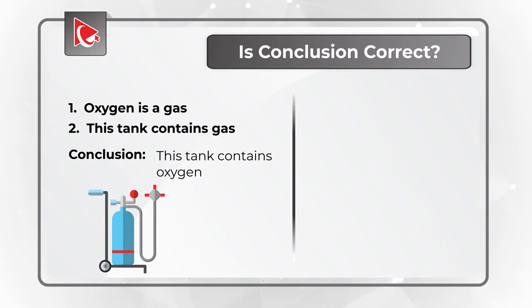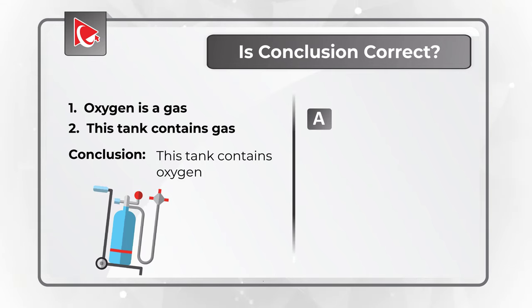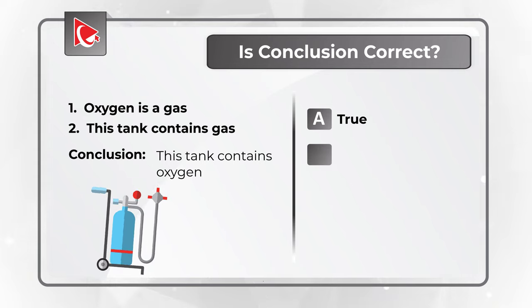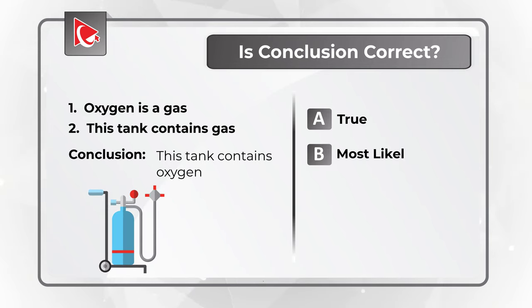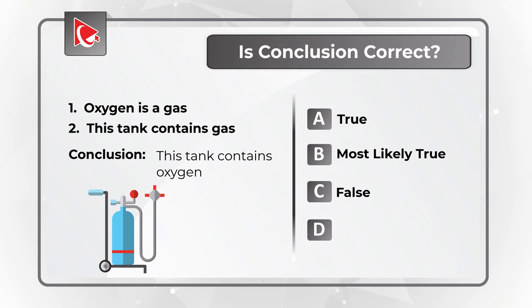Your choices are Choice A: true, Choice B: most likely true, Choice C: false, and Choice D: cannot determine.